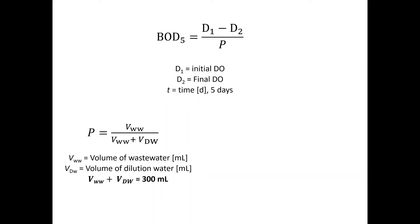And note that the total volume of sample is always 300 ml. For example, for the 5% dilution that we used here, the dilution factor P is 0.05.